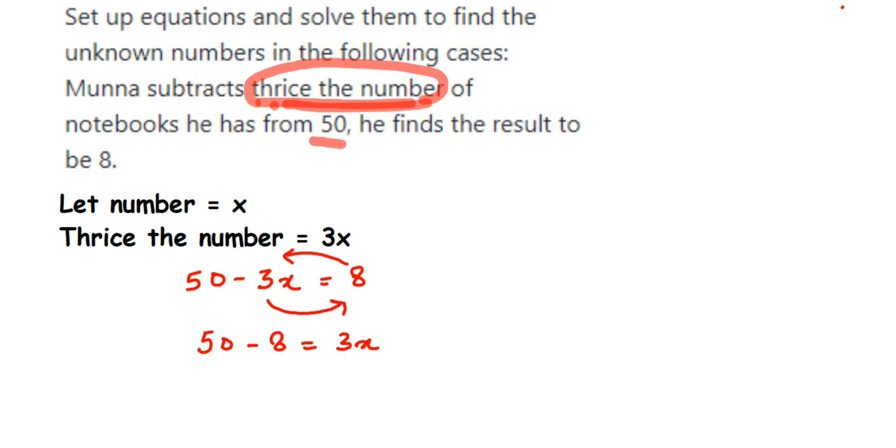So 50 minus 8 is 42. So 42 equals 3x. Now we want only the x value, we want to transpose 3 to the other side. Now 3 is in multiplication, transposed comes in division. So 42 divided by 3 equals x. Cancel them: 3 ones are 3, and here we will get 3 fourteens are 42. Therefore x equals 14.